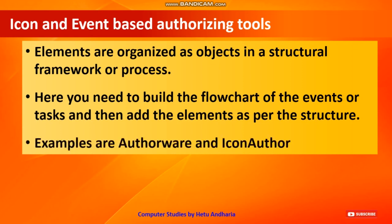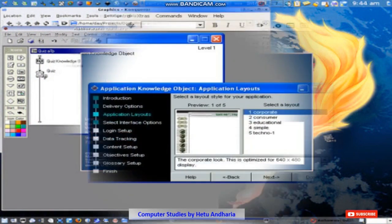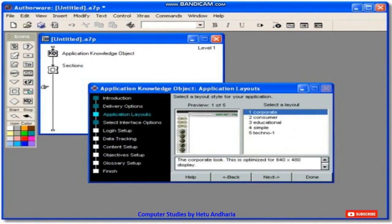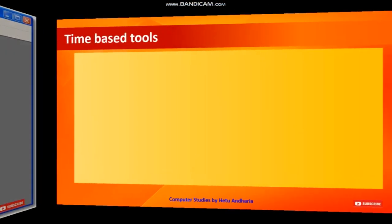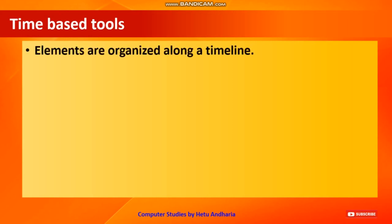Examples of icon or event-based authoring tools are Authorware and Icon Author. Authorware 7 was developed by Macromedia. Now we come to time-based tools, which as mentioned can be compared to PowerPoint — elements are organized along a timeline.